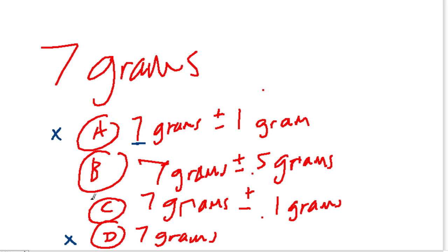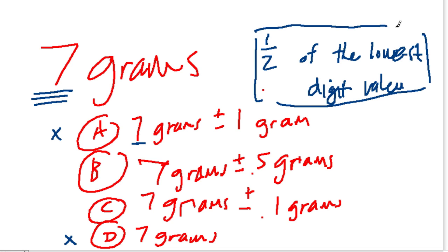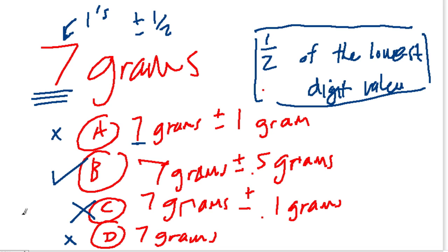At first I was tempted to say 0.1, but the standard for the range of possible values is one half of the lowest digit value. Here, our lowest digit value is the units place — the one's place — so half of that is one half. That's our range: plus or minus 0.5. And that's choice B, so C is out — that's too narrow of a range. This is usually written as the maximum acceptable error: half the magnitude of the smallest measurement unit in your measurement.